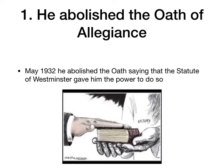The first thing he did was he abolished the oath of allegiance. In May of 1932 he abolished the oath, saying that the Statute of Westminster gave him the power to do so. There were people unhappy about this in Britain, but again de Valera cited the Statute of Westminster and the oath of allegiance was gone.